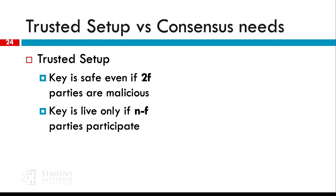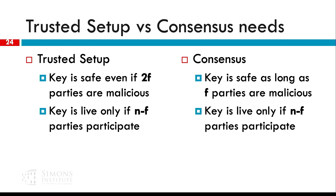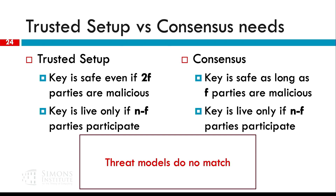In order to solve the first problem, we have to look at what we get from the trusted setup and what we need for consensus. In the trusted setup, if we secret share a threshold key with a threshold of 2f plus 1, that means our key is safe even if 2f of the parties are malicious — we cannot reconstruct the key. However, the key is live only if at most f parties are malicious, because if f plus 1 parties are malicious, you cannot collect enough shares. In consensus, we don't really need that. What we need is our key to be safe as long as at most f parties are malicious. If f plus 1 parties are malicious, consensus in the asynchronous case is broken already, so we don't care about having a higher threshold.